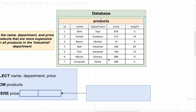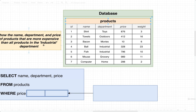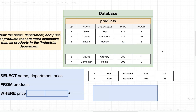Let's first get started by walking through a solution with this sample data set. We would first want to find all the products in the industrial department. It looks like that's just rows four and five — they are both inside of industrial. So we're going to pull those two out. We're then going to go through all the remaining rows and make sure that they have a price greater than 328 and 796.